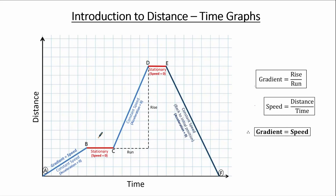We already know that the speed between B and C equals zero since we are stationary there. We can confirm this by recalling that the gradient of a horizontal line equals zero. Coming onto the gradient of line EF, it would not be correct to say it equals the speed, because speed is a positive quantity whereas the gradient of EF is negative, since the distance decreases linearly with respect to time. Therefore, we say that the gradient of EF equals the velocity, because velocity can be a negative quantity.